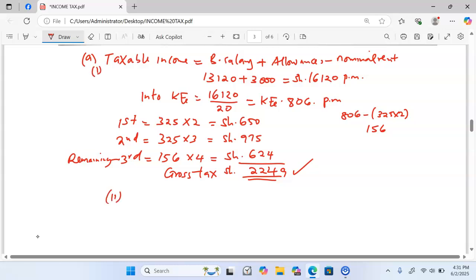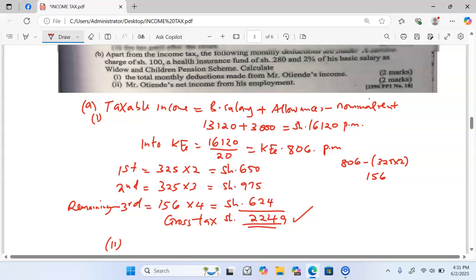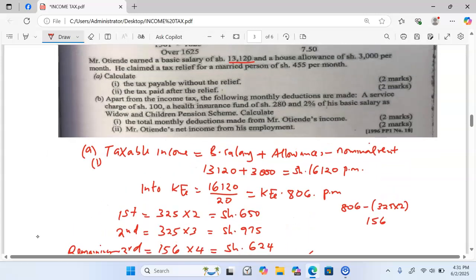Part A Roman 2, the tax paid after relief. That is the net tax or payee.